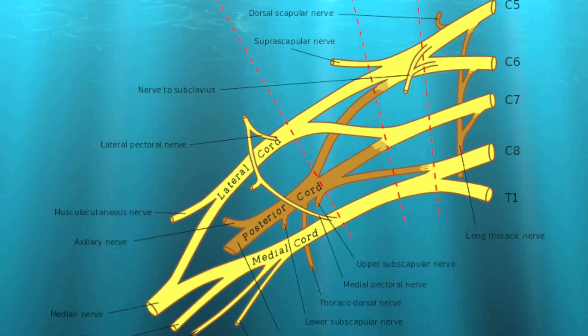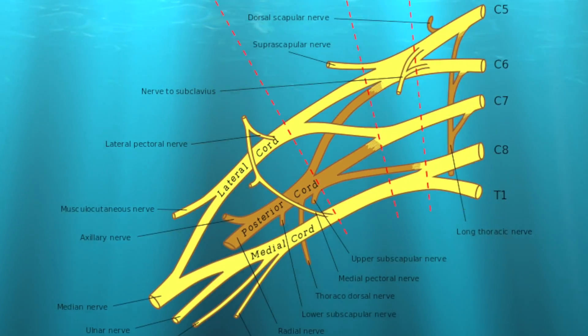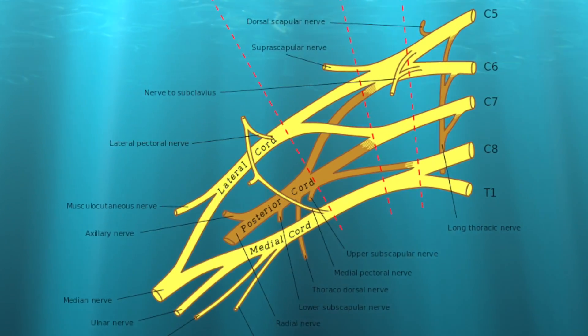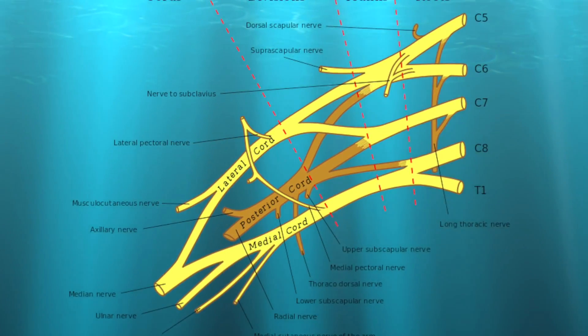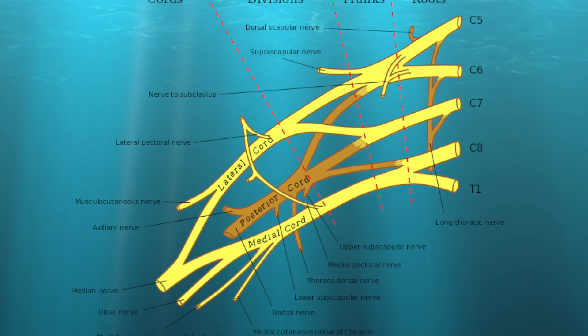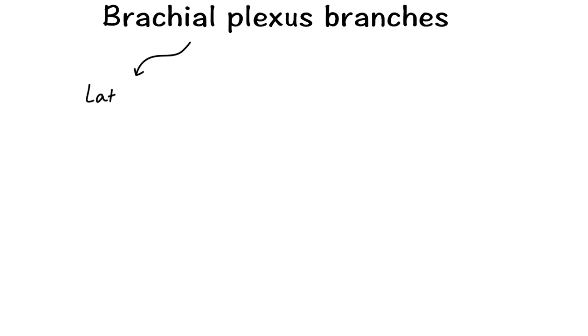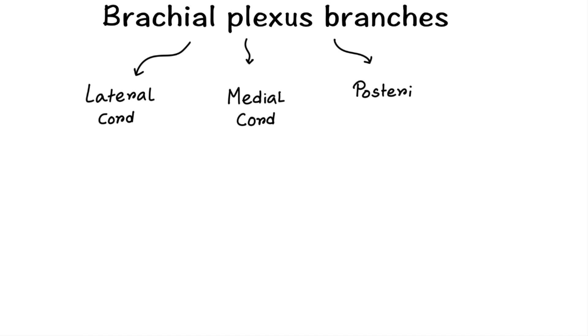Hello everyone, today I have some mnemonics for branches of brachial plexus. As we know, the branches of brachial plexus are divided into three separate chords: lateral chord, medial chord, and posterior chord.